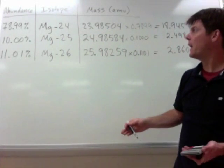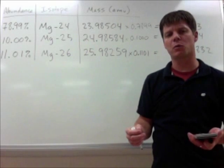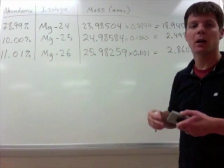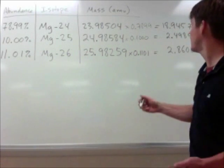Now as I'm considering sig figs, I see that all of my abundances were reported with 4 sig figs. So my values that I've calculated here can all be reported to 4 sig figs.